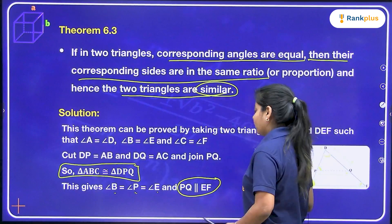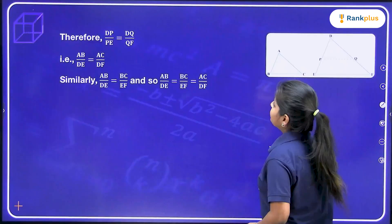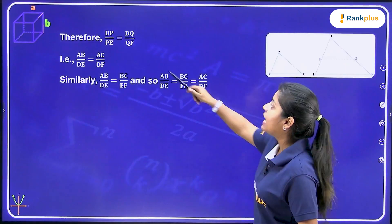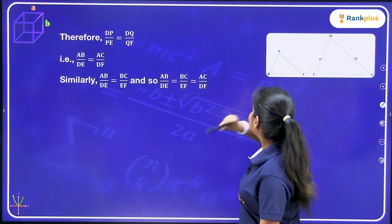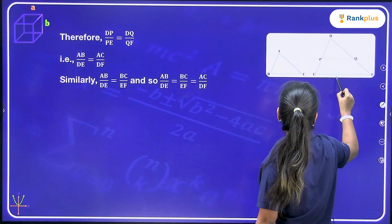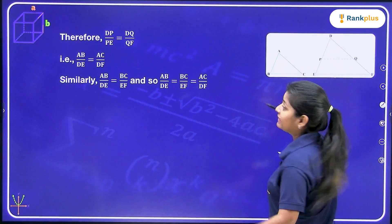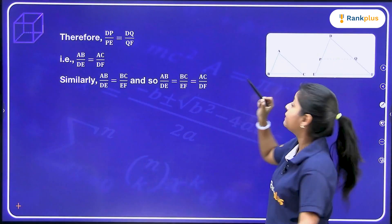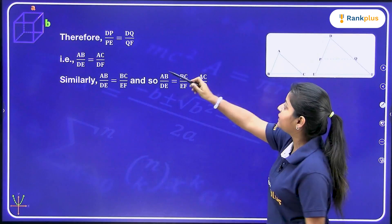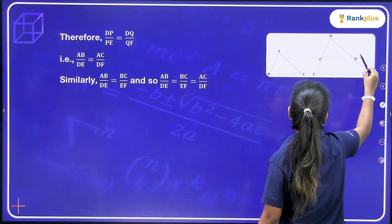Now what remains in the question? We know how to look at the figure for the answer. DP upon PE — if this line is parallel to this line, we know the ratio is divided. So DP upon PE is equal to DQ upon QF.